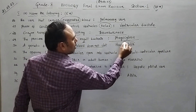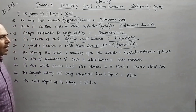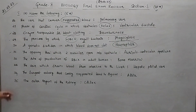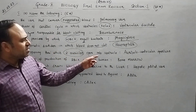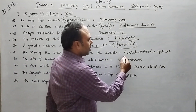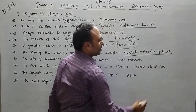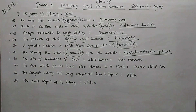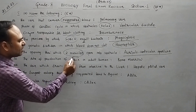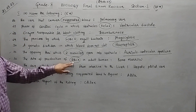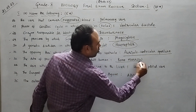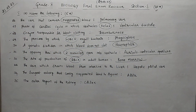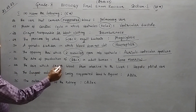Question 29: the process by which white blood corpuscles engulf bacteria — that is phagocytosis. Question 30: the genetic disorder in which blood does not clot — that is hemophilia. Question 31: the opening through which the two auricles open to the ventricle — that is called the auriculoventricular aperture.